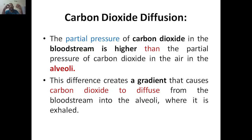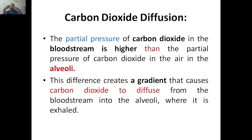Carbon dioxide diffusion: the partial pressure of carbon dioxide in the bloodstream is higher. Why? Because the blood has traveled through almost all parts of the body through circulation and is coming back with the waste — that is carbon dioxide. The waste gas present in the blood is carbon dioxide and it has to be removed. The higher partial pressure of carbon dioxide is in the blood capillaries compared to the alveoli. So, from higher concentration to lower concentration, carbon dioxide will diffuse from the capillary to the alveoli, then from the alveoli to the bronchioles, from the bronchioles to the bronchi, from the bronchi to the trachea, and then out through the nose.